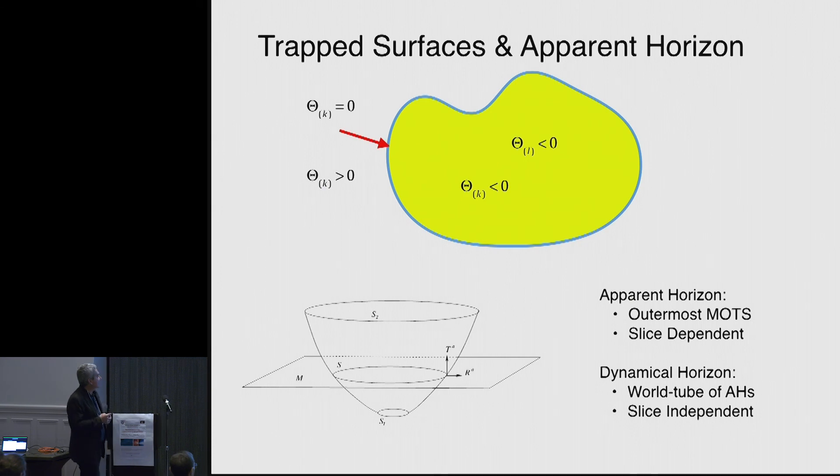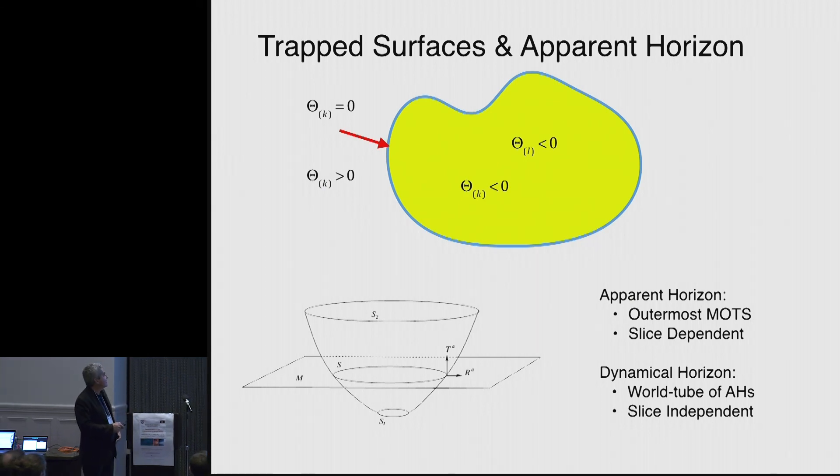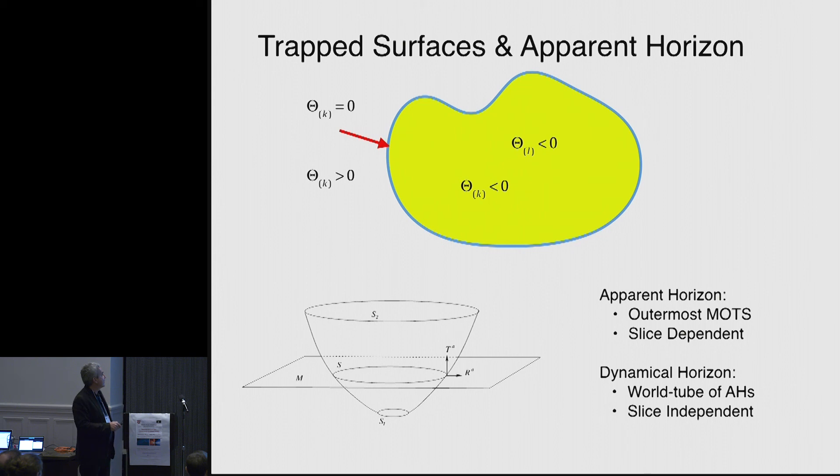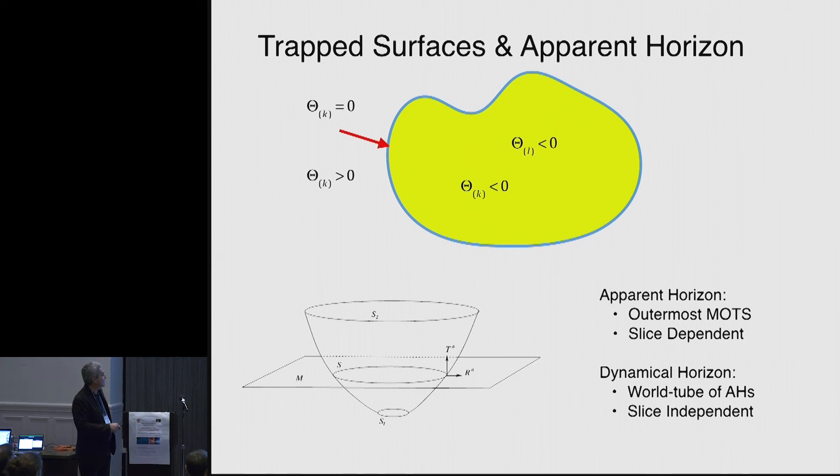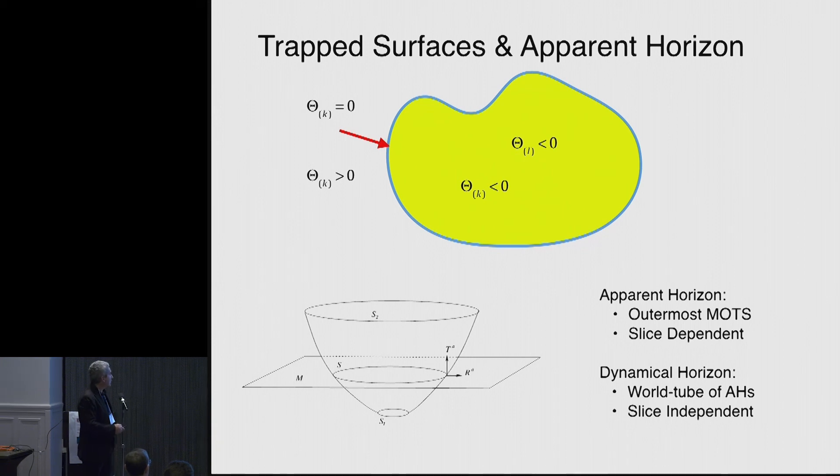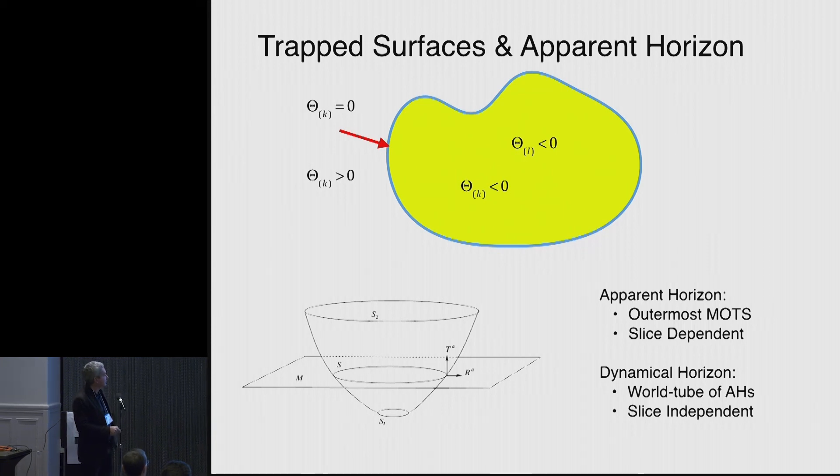So now what we have is then we go and look, as that's what I've just said, we go and look at regions where this is negative, outside is positive, and our codes basically identify this. If you go and stack them, and if you build the world tube of this, that is what is called a dynamical horizon.